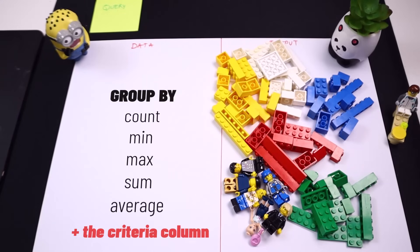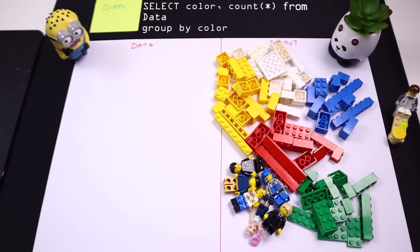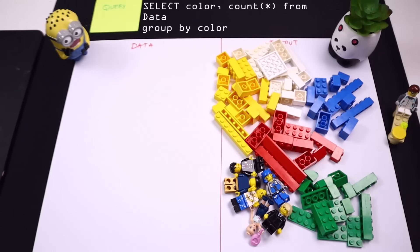For example, you could write a query that says select color comma count star from data group by color. So that will tell you for each color how many items are there in a simple table format. Normally when we use SQL to generate some sort of reports or data analysis, group by is something that we use in that situation.